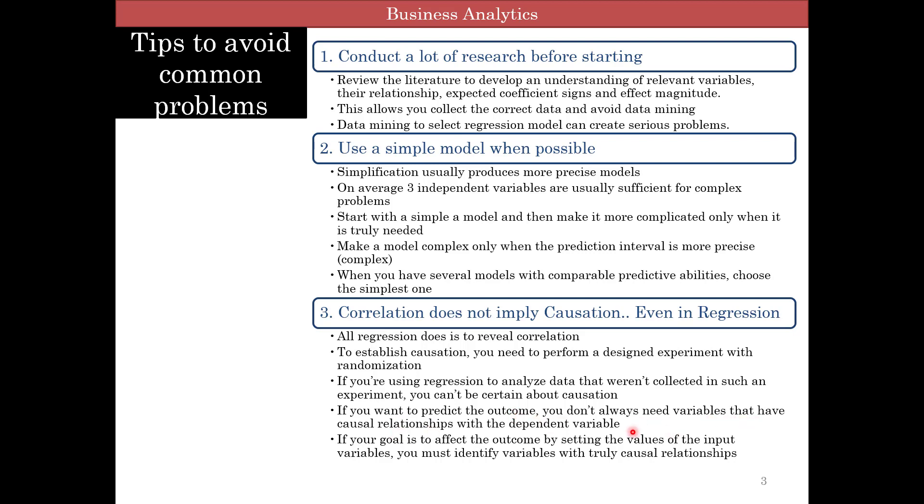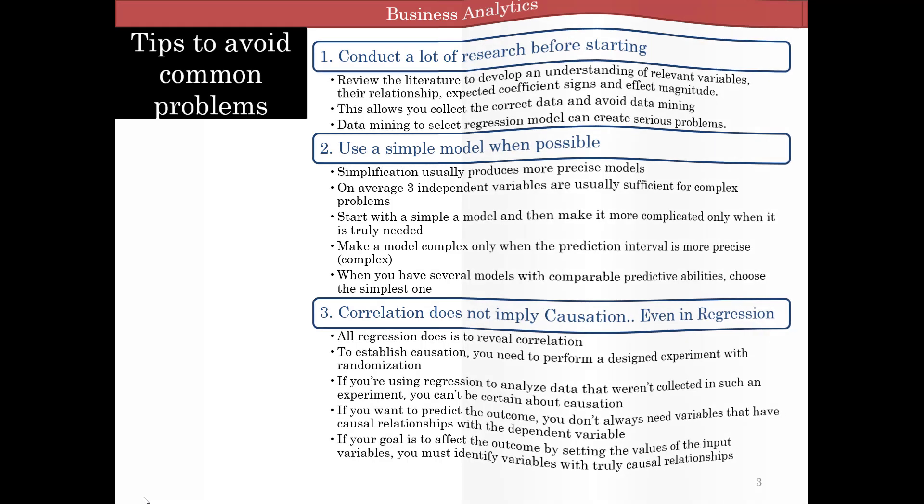Correlation is fine because if you want to predict the outcome, you don't always need the variables that have causal relationships. You can use other variables as proxies. So just for prediction, it's fine. But if your goal is actually to change some values of the input variables to affect the outcome, you must identify the variables that truly define causal relationships.